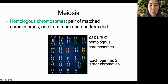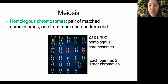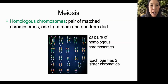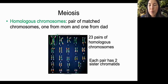Here's chromosome number one, with one sister chromatid from mom and one sister chromatid from dad. 22 pairs are autosomal, meaning that they do not determine the biological sex of the person.